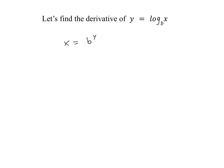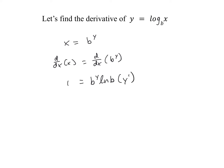From here we can differentiate implicitly, taking d/dx of both sides. The derivative of X is just 1, and on the right we need to use the chain rule. Using our exponential rule for the outer function, we get B to the power of Y times the natural log of B, then multiply by the derivative of the inner function, which is just Y prime. Then we solve for Y prime by dividing by everything that is not Y prime.